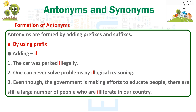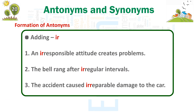Formation of antonyms. Antonyms are formed by adding prefixes and suffixes. By using prefix: Adding IL — The car was parked illegally. One can never solve problems by illogical reasoning. Even though the government is making efforts to educate people, there are still a large number of people who are illiterate in our country. Adding IR — An irresponsible attitude creates problems. The bell rang after irregular intervals. The accident caused irreparable damage to the car.